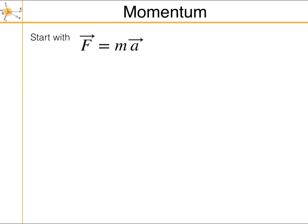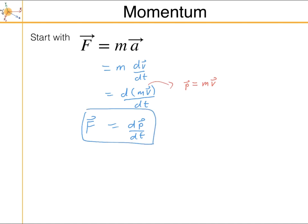Let's start with Newton's second law, F equals ma. Acceleration is just the time derivative of velocity, so I can rewrite this as dv/dt. For a constant mass, I can pull the mass inside the derivative, giving me the derivative of mv with respect to t. So we define momentum as mass times velocity, and Newton's second law becomes dmomentum/dt.